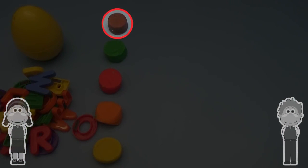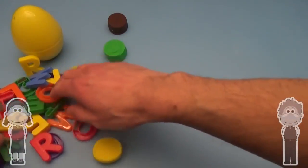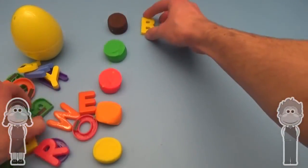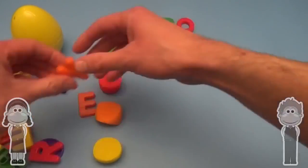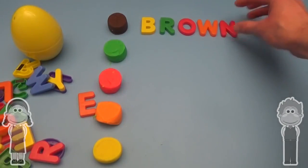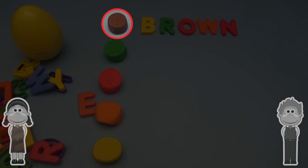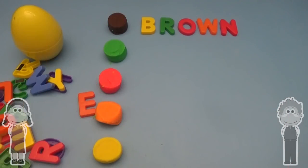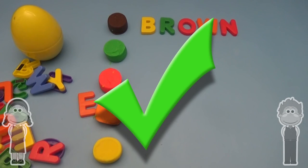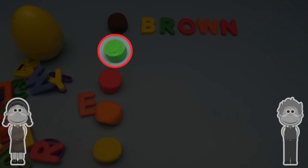Okay, what color is this? Let's use the letters and spell it out together. Brown! B-R-O-W-N. Brown! Great job! Let's keep it up!